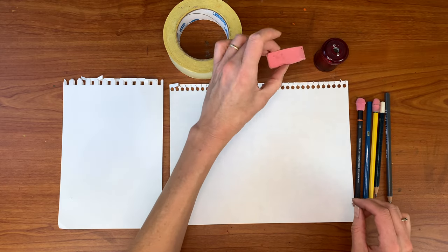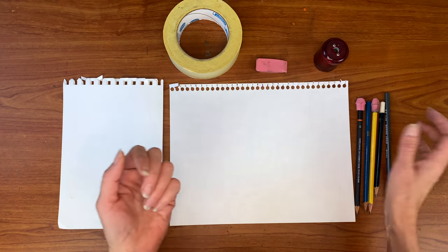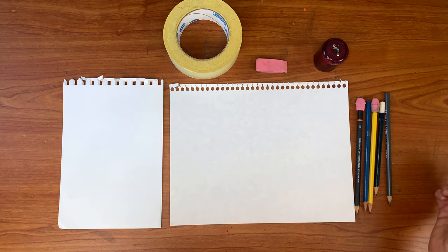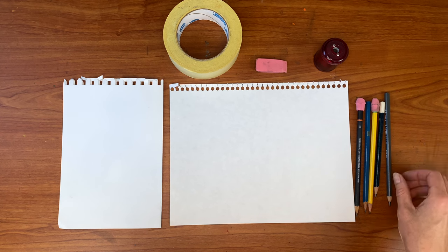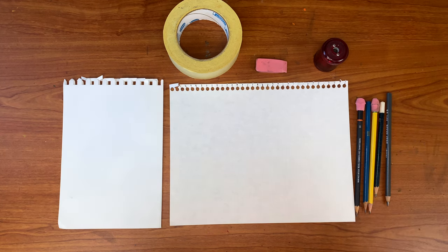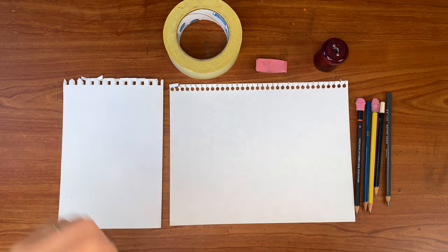You'll need some sort of eraser. I have a separate eraser as well as a couple of erasers on a couple of my pencils. And you'll need a variety of graphite pencils. You can also do this technically with just one graphite pencil, but you get a much broader range of values or lights and darks if you have a range of graphite pencils.